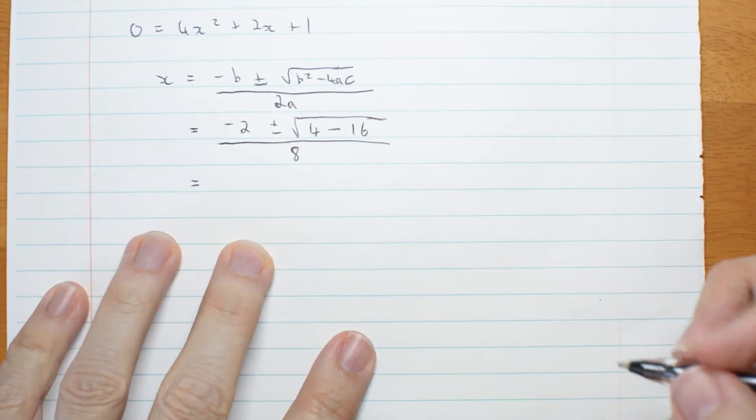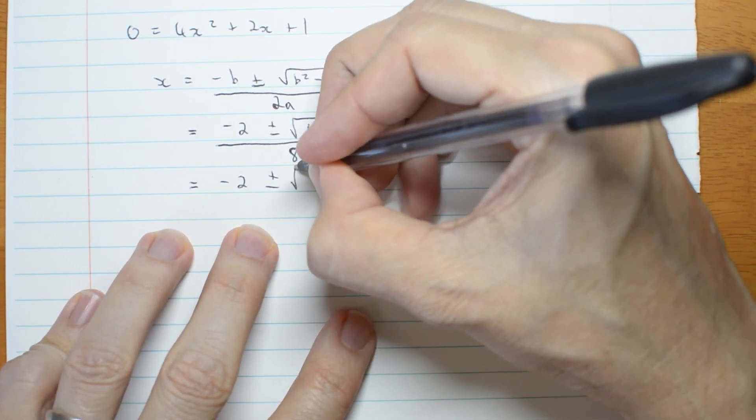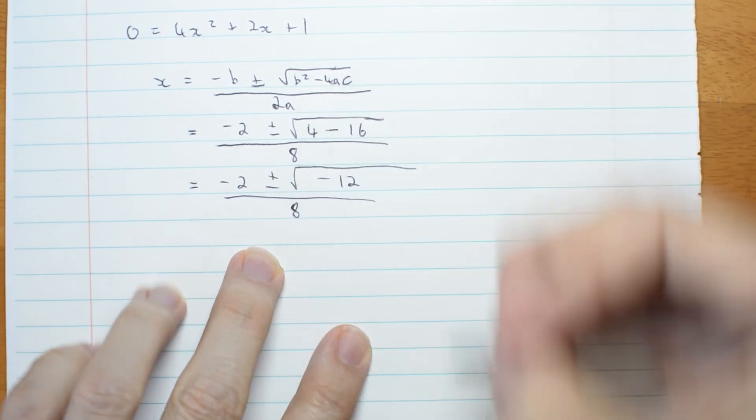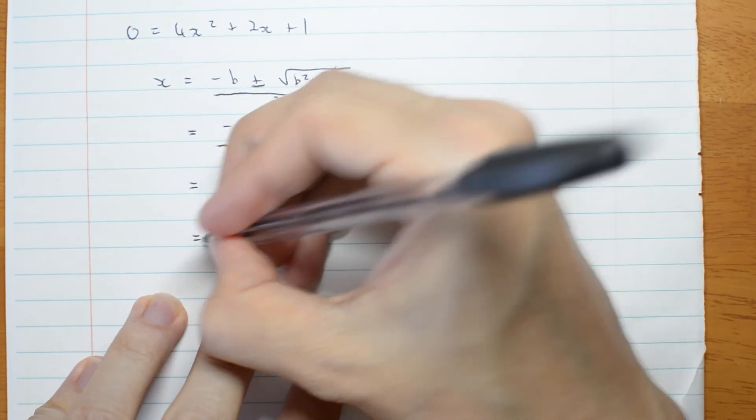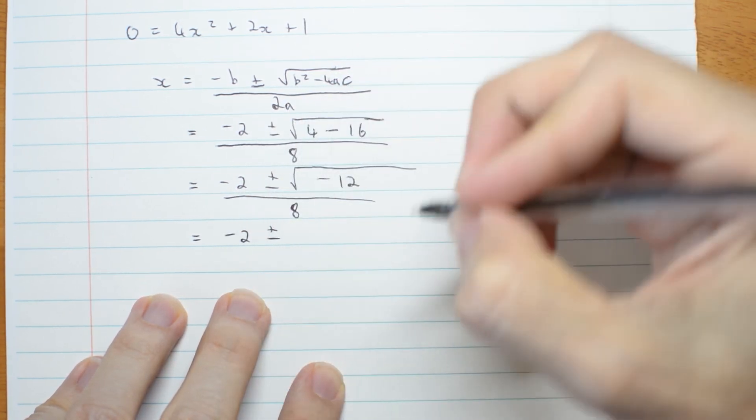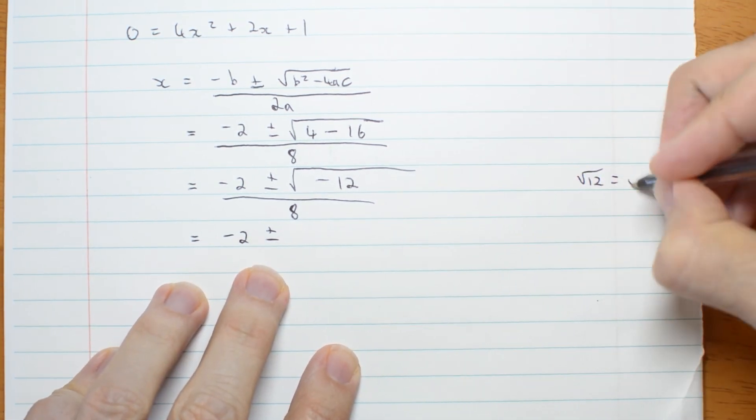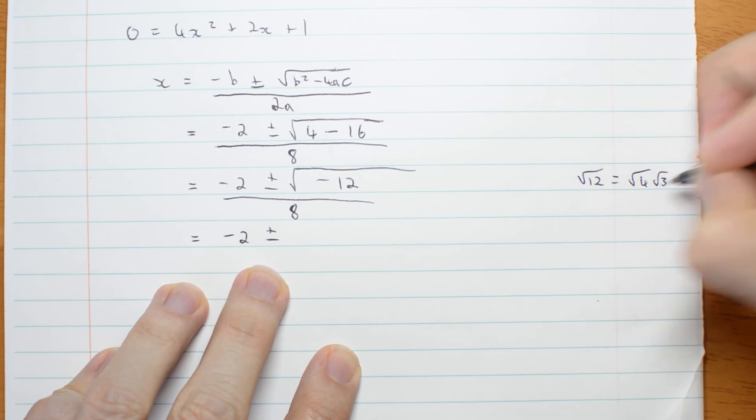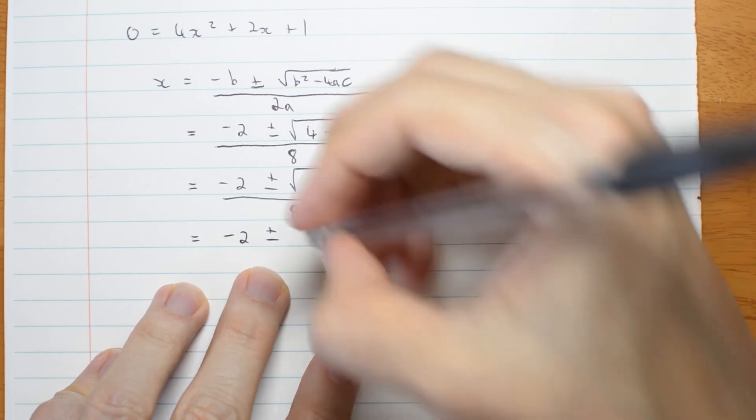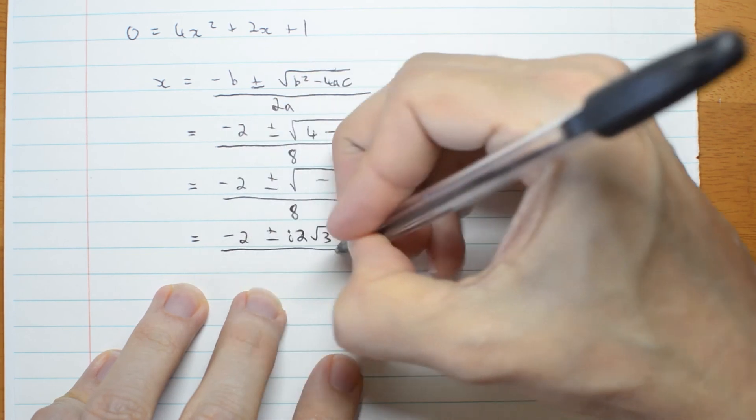Well, negative 2 plus or minus the square root of negative 12 all over 8. That is negative 2 plus or minus, what's root 12? Root 12 is root 4 root 3, which is 2 root 3. So I've got this with an i. i times 2 root 3 all over 8.